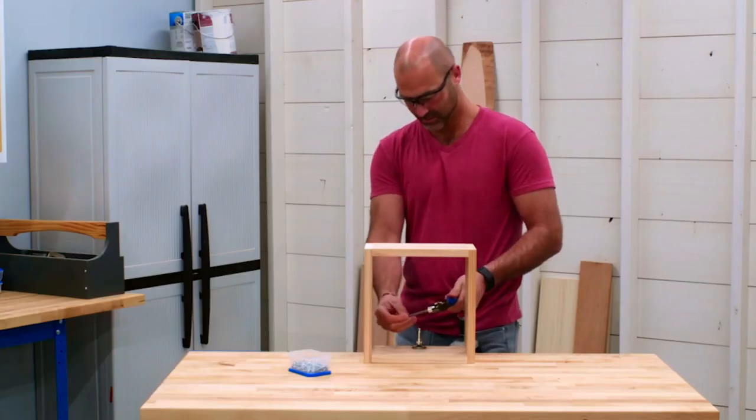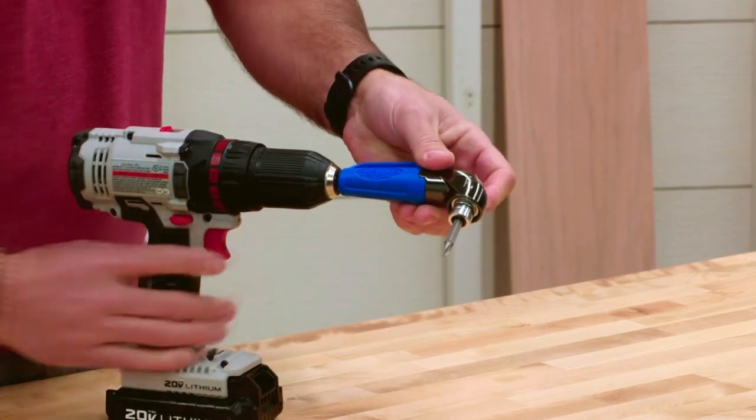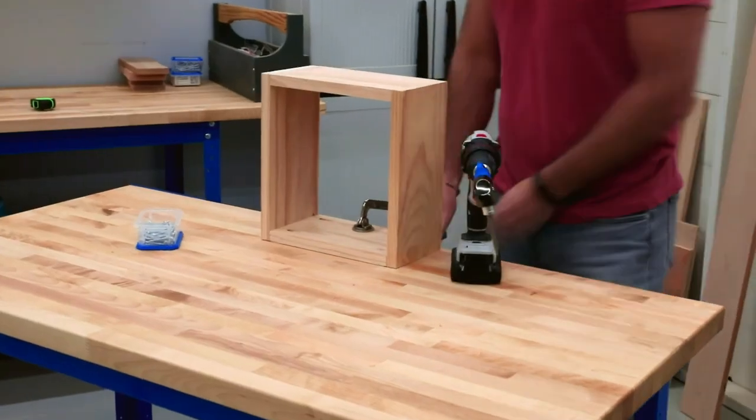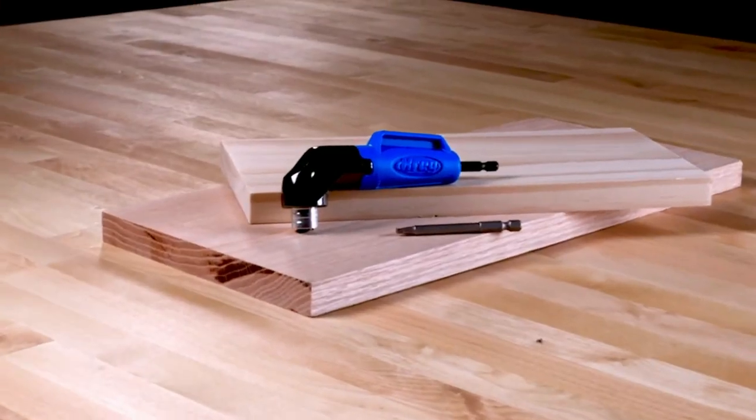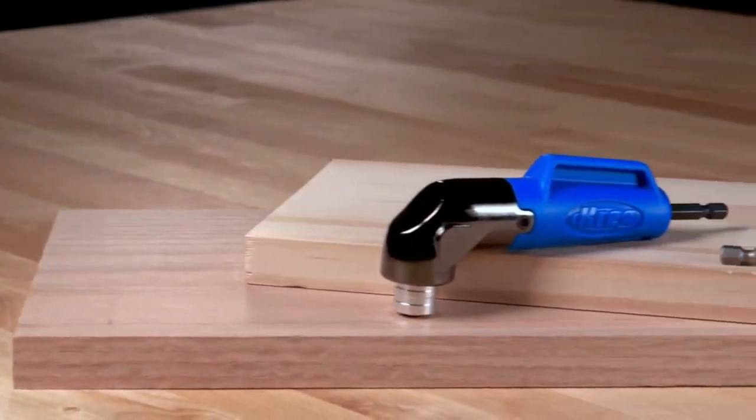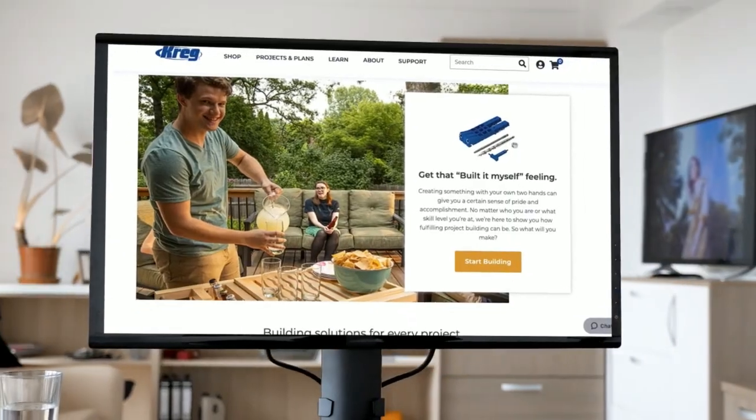Just install the included 3 inch square drive bit that locks in place so it won't slip out. The 90 degree pocket hole driver is impact rated too, so you can even use it with an impact driver.